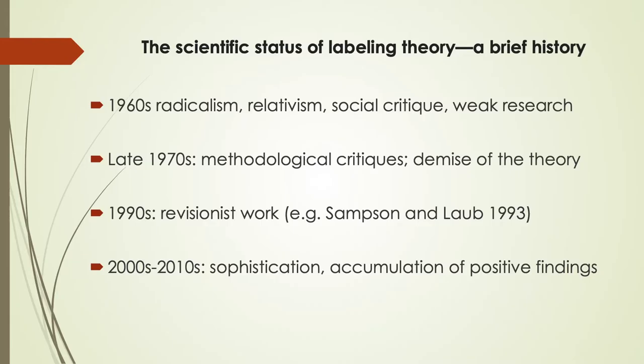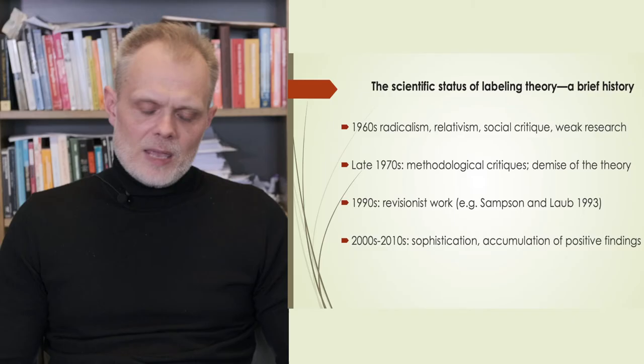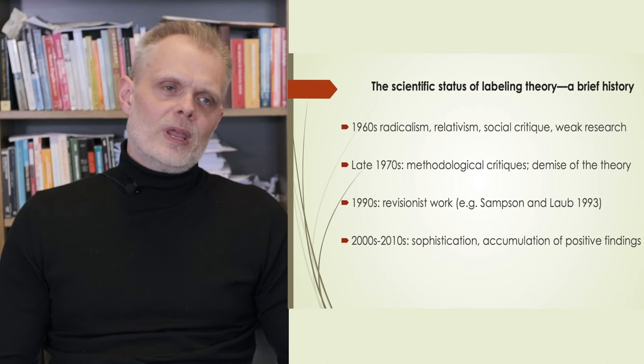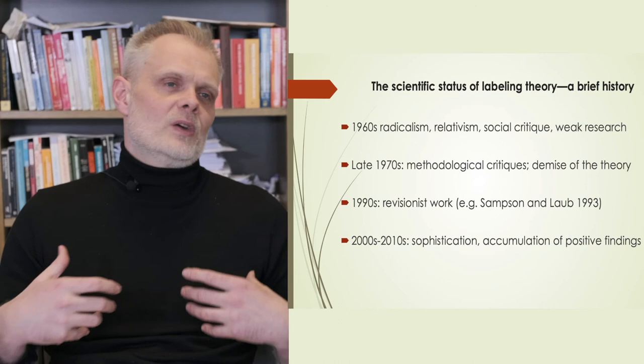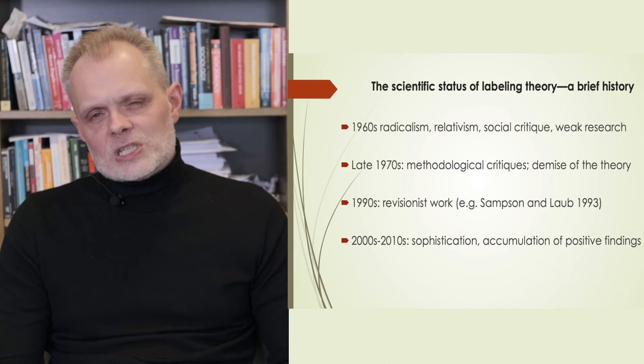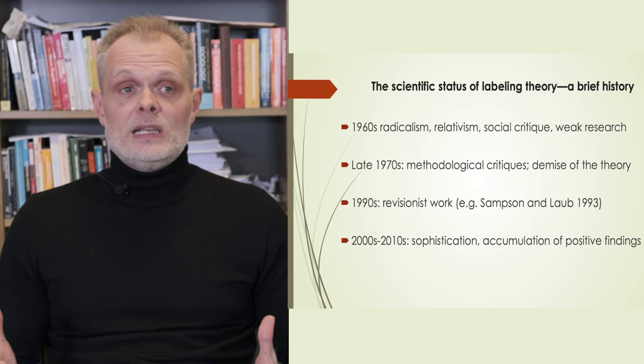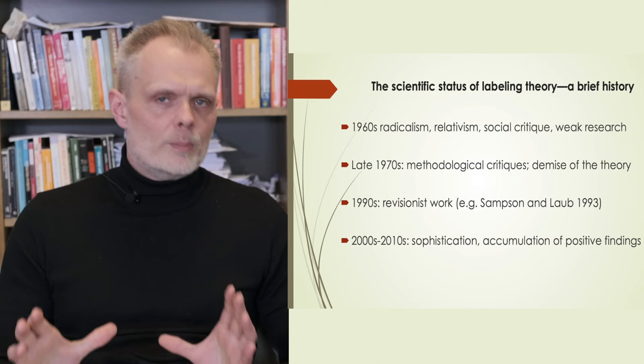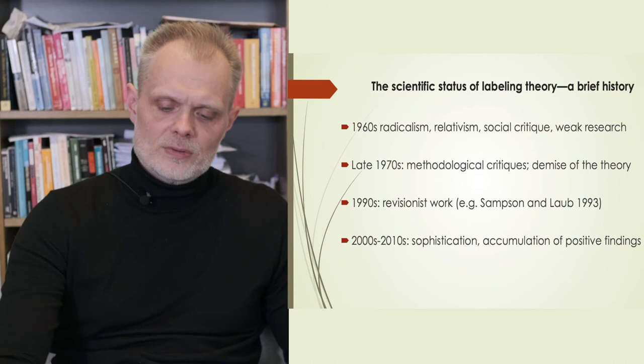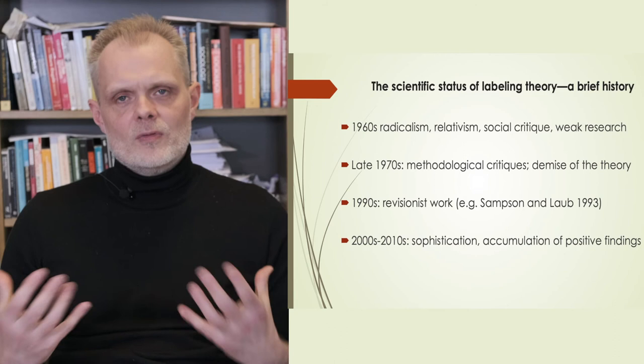The scientific status of labeling theory. Labeling theory has an interesting story within criminology. In the 1960s, it became very popular as part of social critique, but the scientific status of the research was very weak. More recently, especially during the 2000s and 2010s, labeling research has become much more rigorous based on longitudinal measurement-rich data. What has happened during the past two decades is that evidence favoring labeling theory has accumulated, and in the past ten years, it has accumulated quite rapidly.